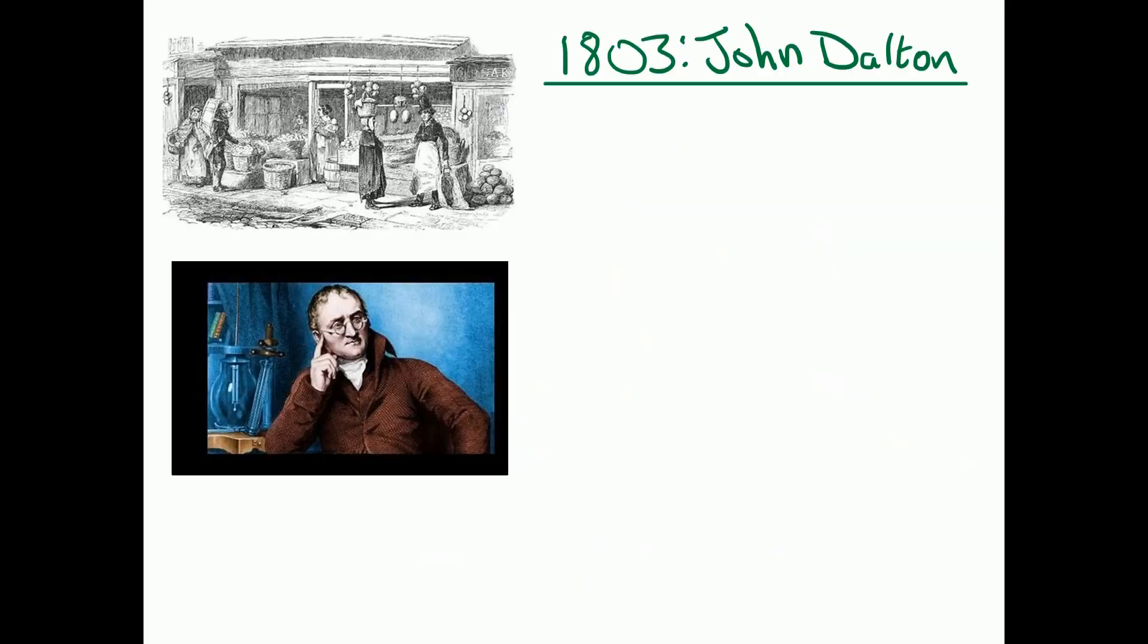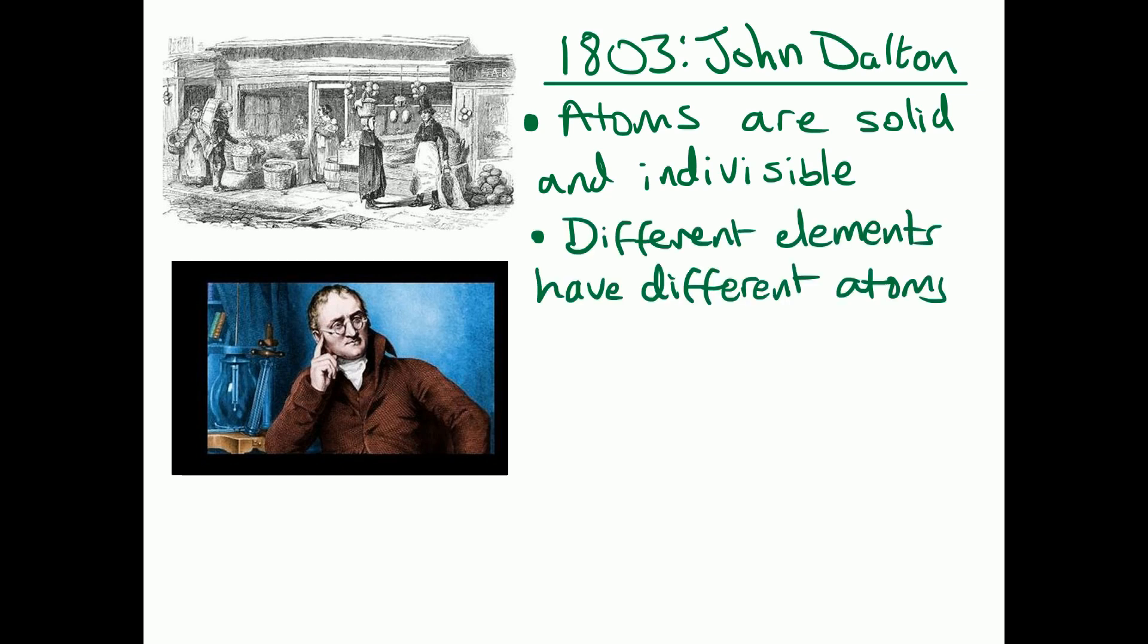So Democritus's ideas lasted for over 2000 years until anyone else could build upon those ideas, and that was John Dalton in 1803. He agreed with Democritus that atoms are solid and indivisible, so they're the smallest particles. But he built on it by saying different elements have different types of atoms, and an element has the same type of atoms. And that is still our definition of an element today.